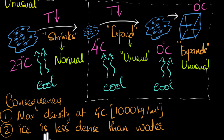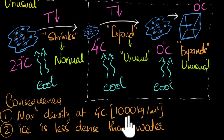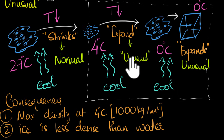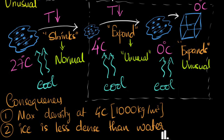Ice is less dense than water, and this is the reason why ice floats on water. We take this for granted because we see it every day, but it's really special. Ice floats on water because of this anomalous behavior.